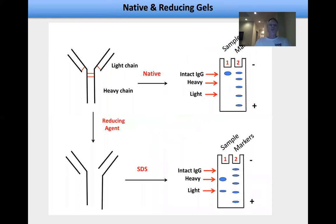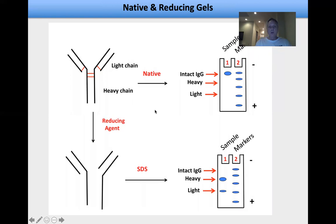In addition to reducing gels, you can also do native gels. In a native gel, you run the immunoglobulin intact without SDS — the intact IgG runs at a very high molecular weight, indicative of the light and heavy chains being associated by covalent disulfide linkages. Lane two is just an arbitrary molecular weight marker. If you reduce the immunoglobulin with beta-mercaptoethanol or dithiothreitol, you dissociate the chains, and running an SDS-PAGE gel will show two bands: one for the heavy chain and one for the light chain.